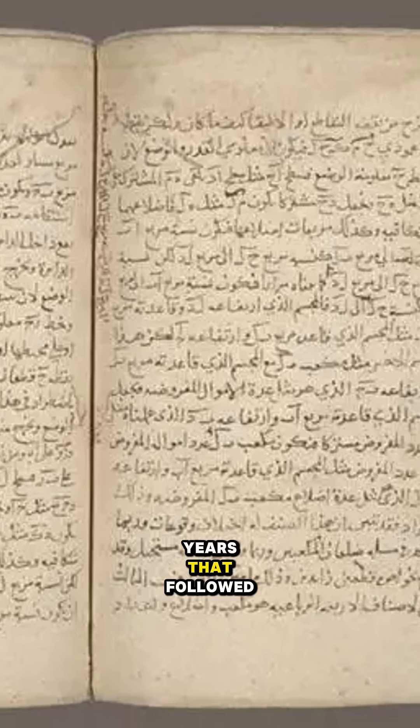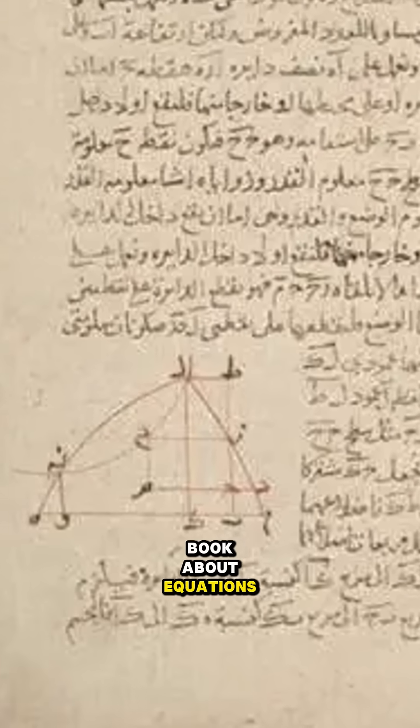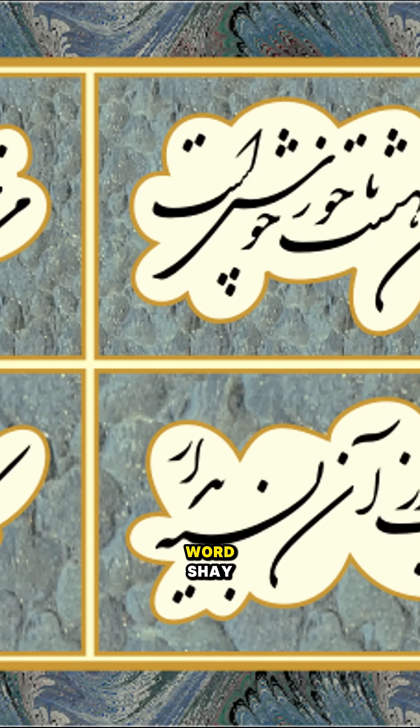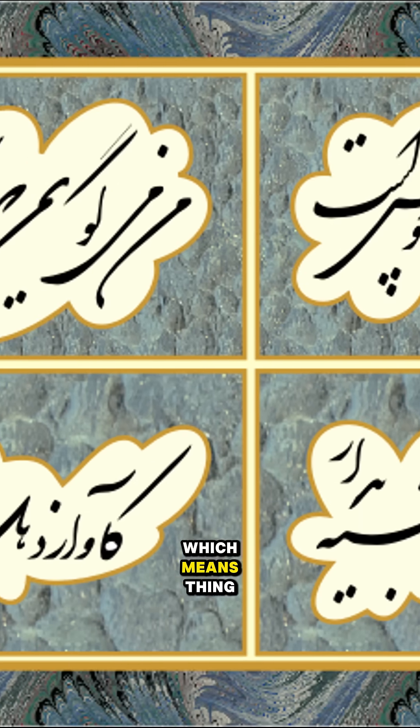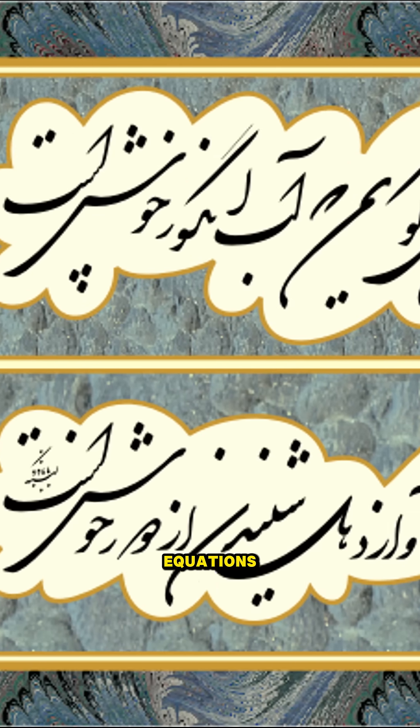Still, in the years that followed, he couldn't resist and ended up writing a mathematical book about equations. In it, he used the Arabic word 'shay,' which means 'thing,' to refer to the unknown in equations.